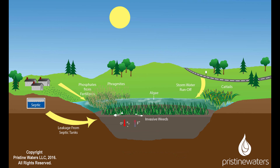As lakes and ponds fill, the water depth decreases, resulting in higher water temperatures and reduced dissolved oxygen levels. Indigenous life dies, algae becomes dominant, and the pond or lake ultimately turns into a swamp and then land.